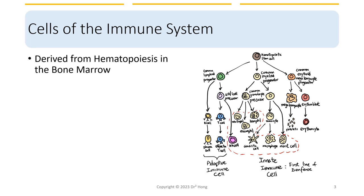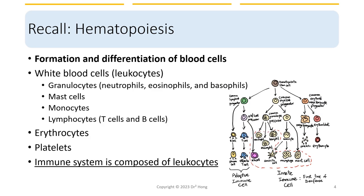Here is a recap slide from the first lecture to remind us that all of the blood cells are derived from the process called hematopoiesis in the bone marrow. The major focus of today's lecture is to look at white blood cells or leukocytes, including granulocytes, mast cells, monocytes, and lymphocytes derived from this process. Other than these white cells, we also have erythrocytes and platelets, which we will not discuss in immunology for now.